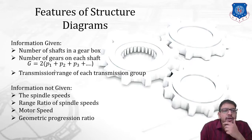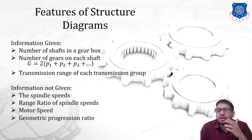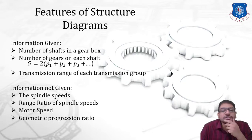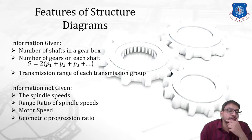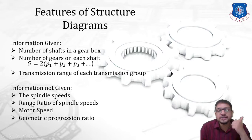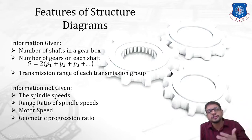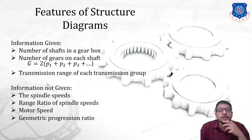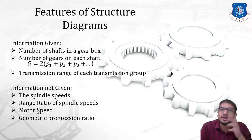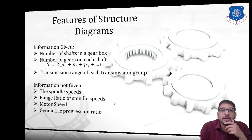The transmission range of each transmission group can also be determined from the structural diagram. However, for determining motor speed, range ratio, and spindle speeds, we need to draw another diagram called a speed diagram and a ray diagram.